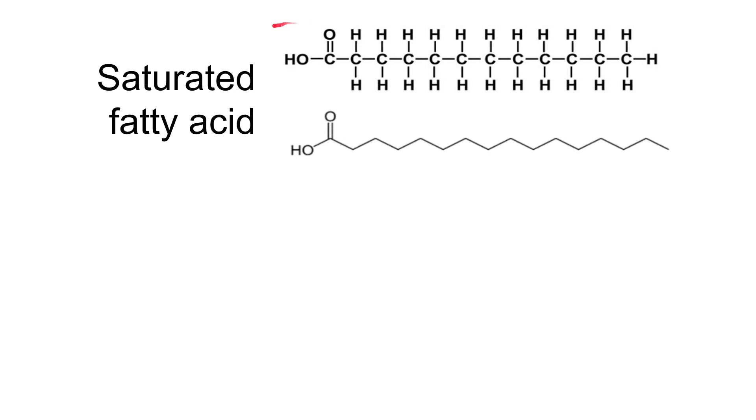On this side here you can see we have a carboxylic acid group. Carboxylic acid is COOH, so anywhere you see that COOH, that's a carboxylic acid group. This is where the name fatty acid gets the acid portion of its name. This is an acidic group.